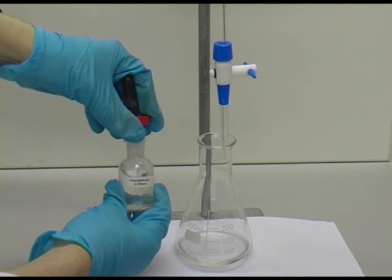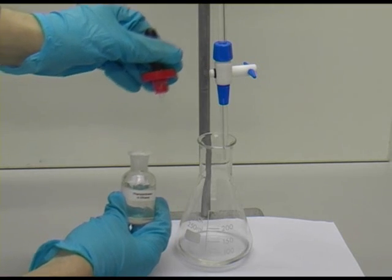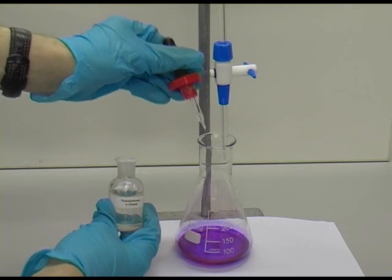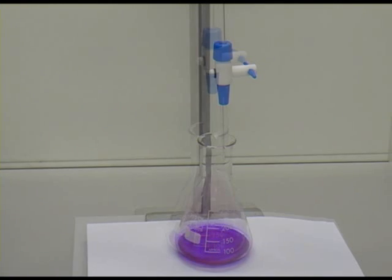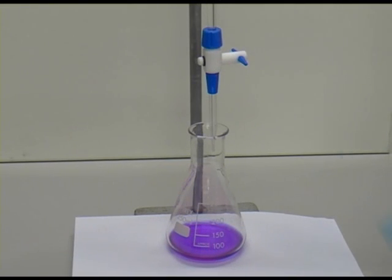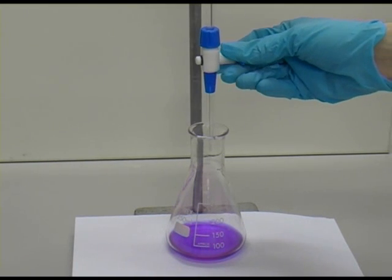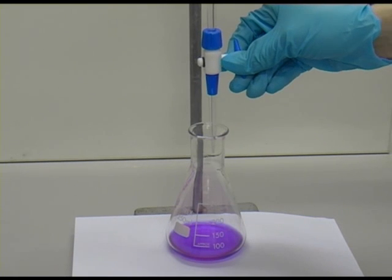Here we are going to use a slightly different indicator, phenolphthalein. It's coloured in an alkali but clear in an acid. We begin to add acid to the alkali using this piece of equipment, a burette.